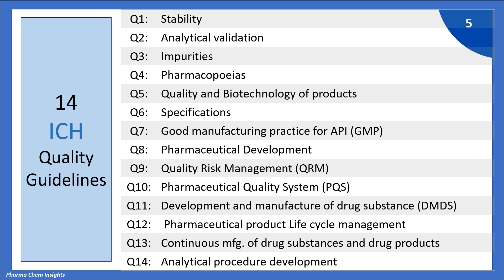Q8 is pharmaceutical development, Q9 is quality risk management (QRM), Q10 is pharmaceutical quality system (PQS), Q11 is development and manufacture of drug substance (DMDS), Q12 is pharmaceutical product life cycle management, Q13 is continuous manufacture of drug substances and drug products, and Q14 is analytical procedure development.